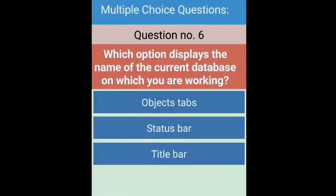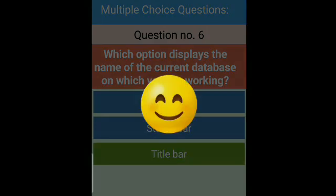Sixth question: which option displays the name of the current database on which you are working? As we know, it is the title bar. The title bar is displayed at the top of every window and it shows the name of the software and the name of the file. So the right answer is title bar.